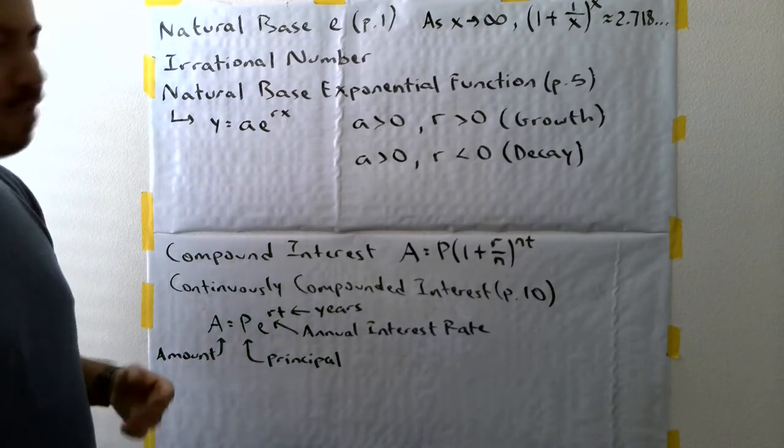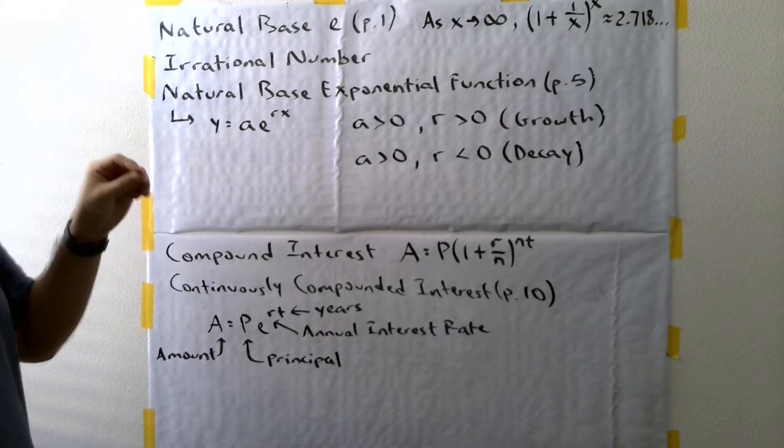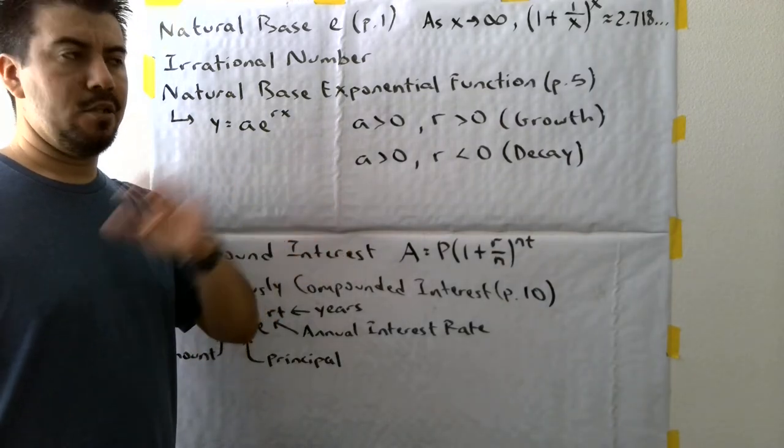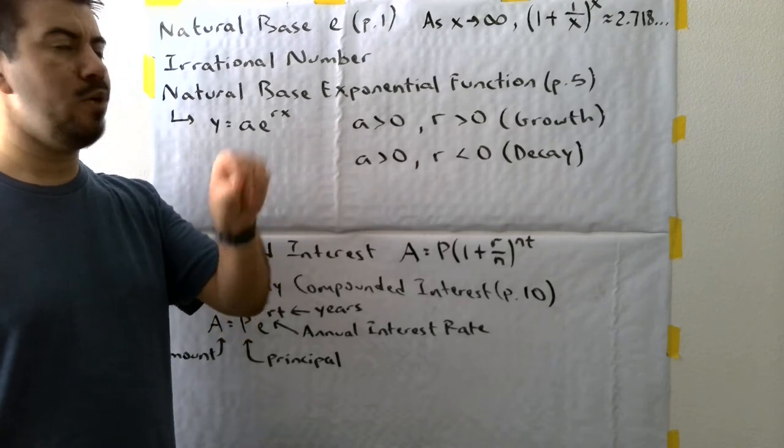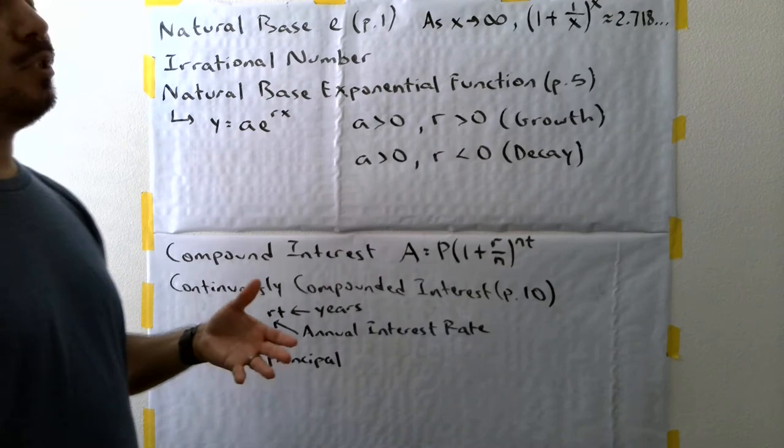The natural base E is defined as an irrational number approximately equal to the number 2.718, or more precisely 2.71828 dot dot dot. That means it's going to be a continuous irrational number.